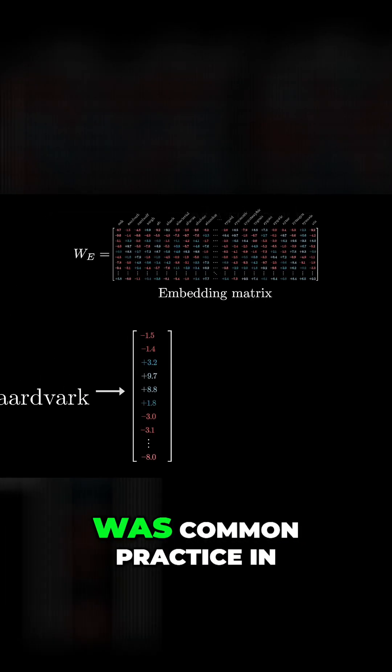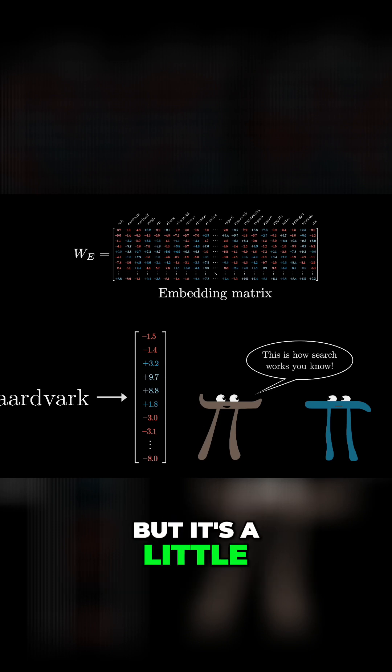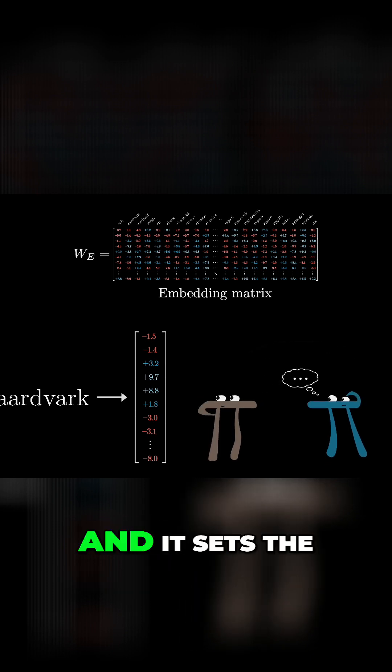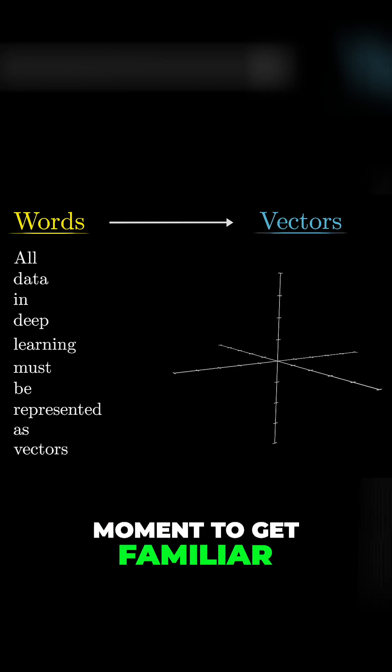Turning words into vectors was common practice in machine learning long before transformers, but it's a little weird if you've never seen it before, and it sets the foundation for everything that follows, so let's take a moment to get familiar with it.